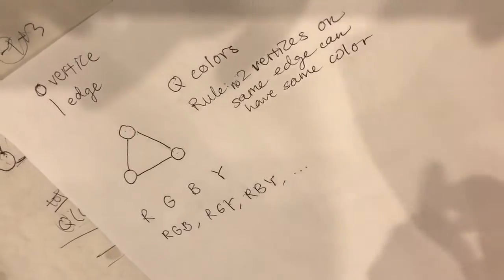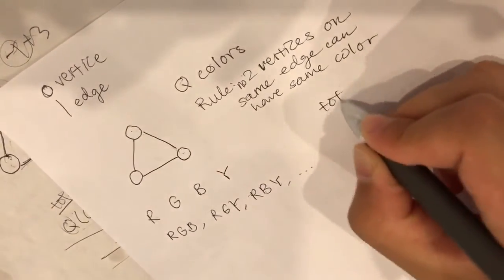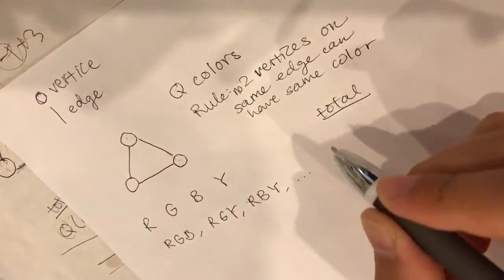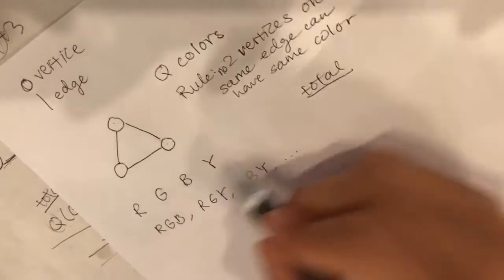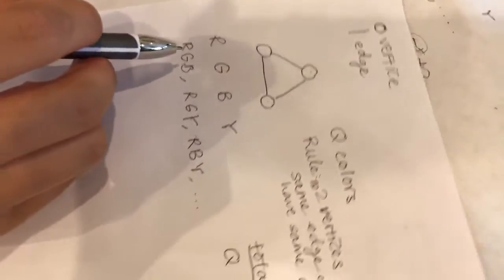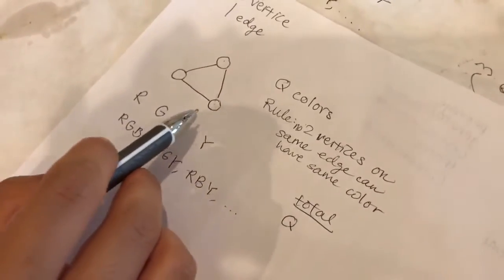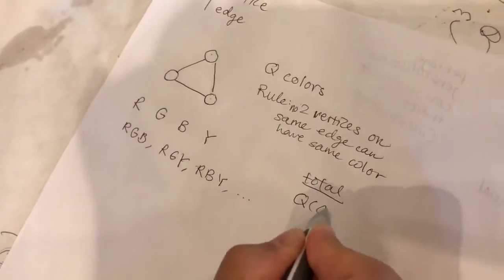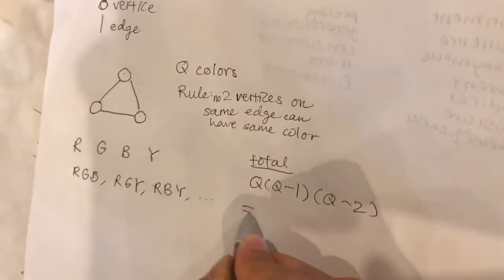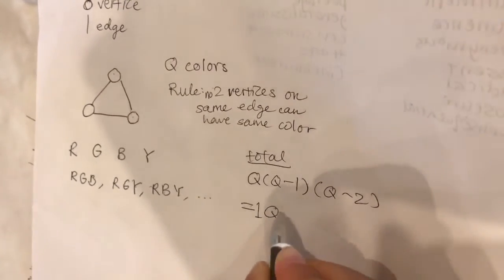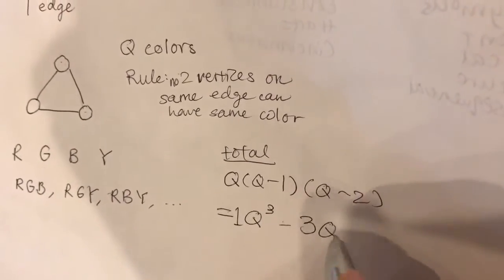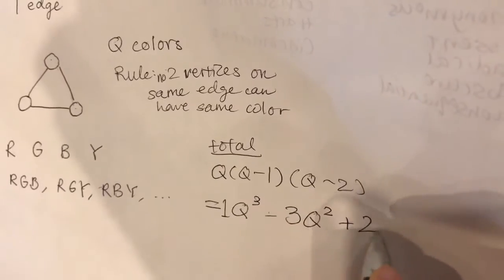Since we have Q colors, the total amount of different ways we can color the vertices for a triangle is: for the first color we have Q options since we haven't chosen any of them yet, for the second vertices we have only Q-1 colors left, and for the third vertices we have Q-2 colors left. When we multiply that out, what we get is Q³ - 3Q² + 2Q.